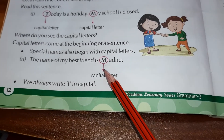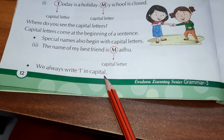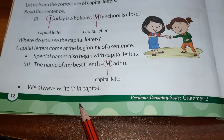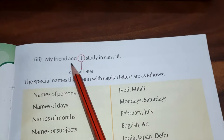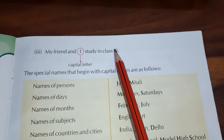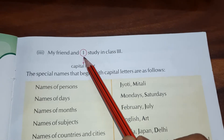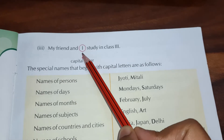The next point: we always write I in capital. I is always written in capital letter. For example, you can look here — 'My friend and I study in class third.' So I is always written in capital letter.